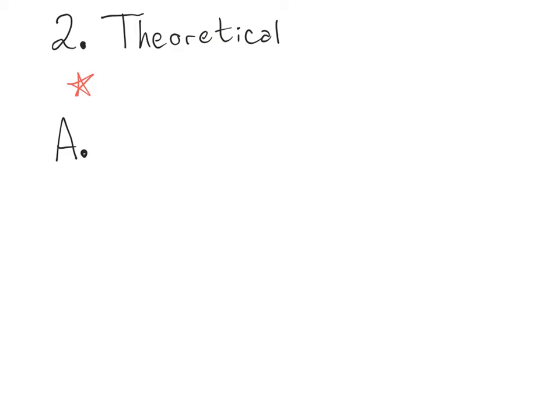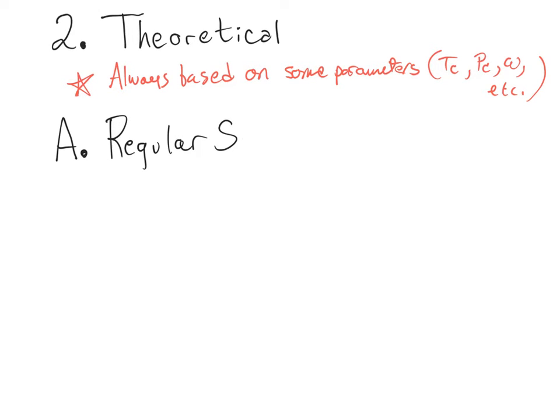Okay, so if empirical's not going to cut it in all cases, let's turn to the yin to empirical's yang, theoretical. And theoretical, remember, is always based at least a little on some parameters. And what do I mean by that? Well, such as critical temperature, critical pressure, eccentric factor, that's that omega thing. Usually there's a few other measurements that might play in in some way. And it turns out theoretical has two different subtypes. One is called regular solution, and the other one has a different name, which I'll get to in a moment.